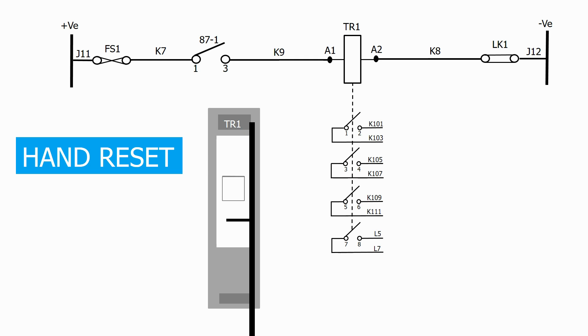Again, the flag and contacts operate when the relay is energized, but the contacts and flag don't change state when the initiation is removed and the relay coil de-energizes. To reset the contacts and the flag, we need to physically push the lever on the relay up.